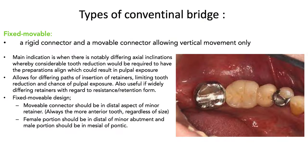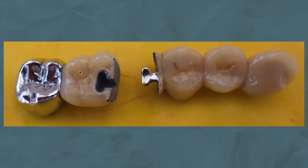The next type of bridge is called a fixed-movable bridge, which has one rigid connector and a movable connector on the other side, allowing vertical movements only. These are generally used for longer spans where the angulation of the teeth is not parallel and the preps would be very destructive. Two different paths of insertion are used — the first part is placed, followed by the second part locking into the first. For example, when replacing premolars and a first molar, there is a male component on the right of the first molar and a female component on the left. The left side is cemented first, then the right side, where the patrix inserts into the matrix.